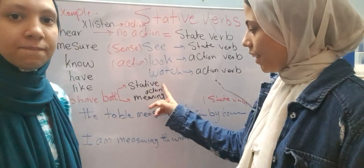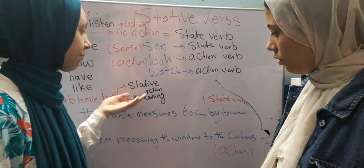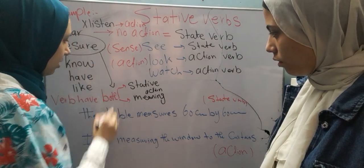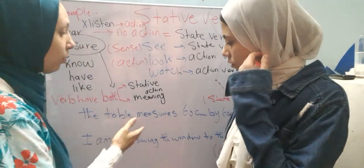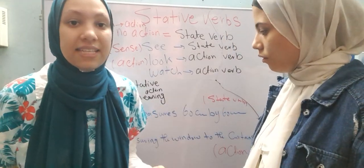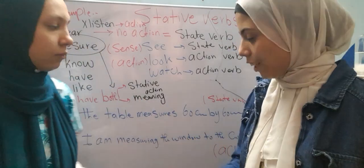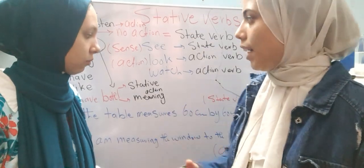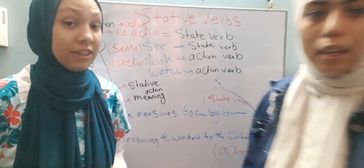Some verbs have both stative and action meaning. Take the verb 'measure'. In its stative meaning: 'the table measures 60 by 60 centimetres' — that's a state of the table. But if I say 'I'm measuring the table for the curtains', I'm doing an action, so that is an action verb.